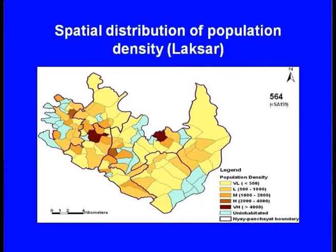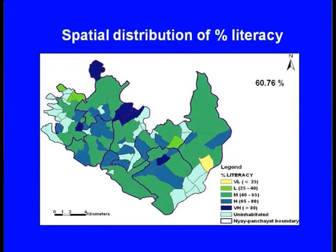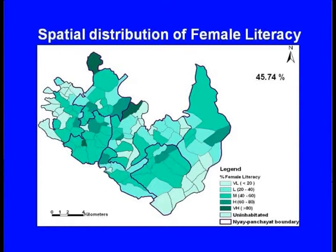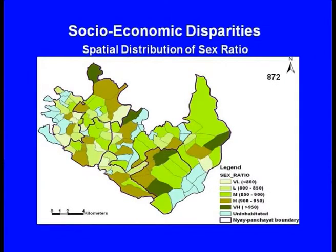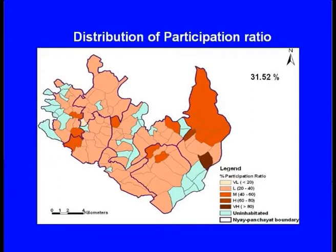Having done this, we go on to the allocation — finding the spatial location with the help of the location allocation model — and proceed to facility projection, since all facilities cannot be provided within one time frame, requiring sequential development of infrastructure. Now let us look at the results. We have the socio-economic disparities displayed in terms of spatial distribution of population density, and what we can see is that the population is by and large not very dense in this area. Light blue areas depict uninhabited villages. The spatial distribution shows percentage literacy of about 61 percent, while female literacy is about 46 percent and the scheduled caste population is about 24 percent.